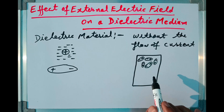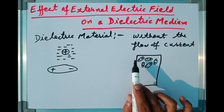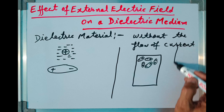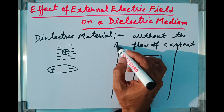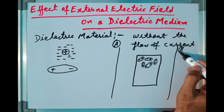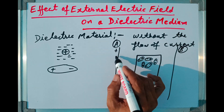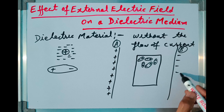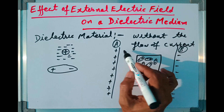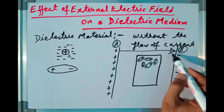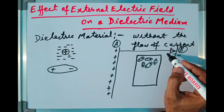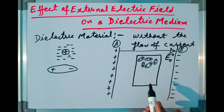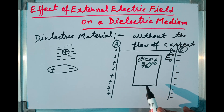Now what will happen to this slab when a strong electric field is applied? Suppose I apply an external electric field with the help of two sheets — let me take sheet A and sheet B. Suppose sheet A is externally positively charged and sheet B is negatively charged. Then electric field lines will be directed from the positive sheet towards the negative sheet. Let me call this external field as E₀ vector. So this field acts on the molecules inside the dielectric slab.